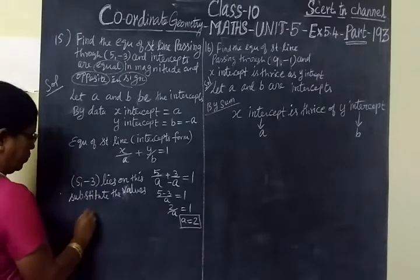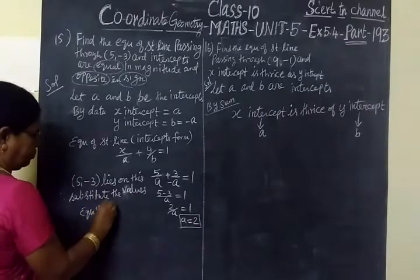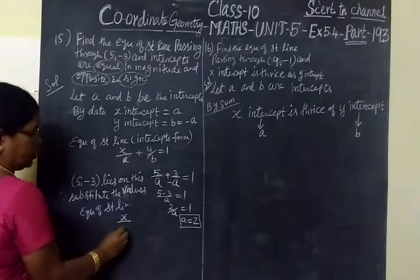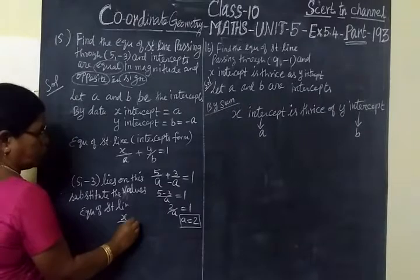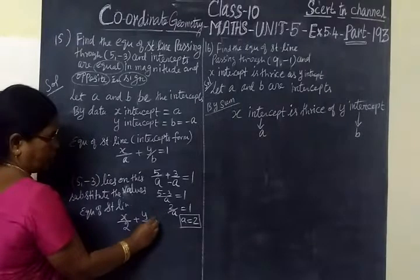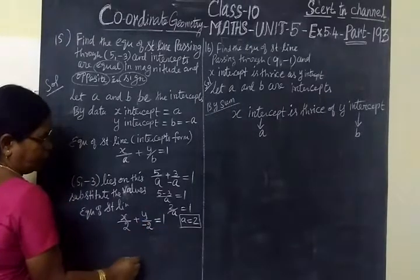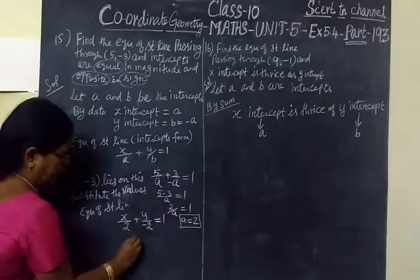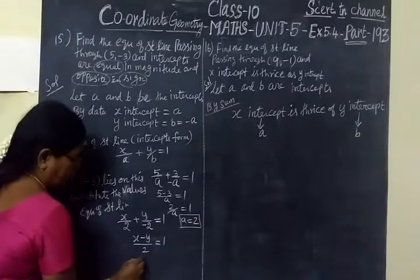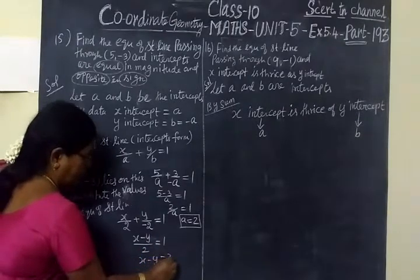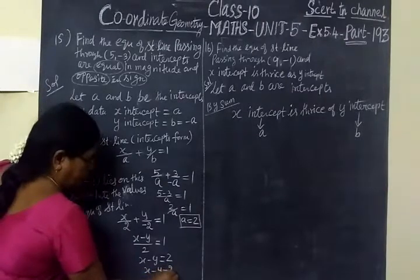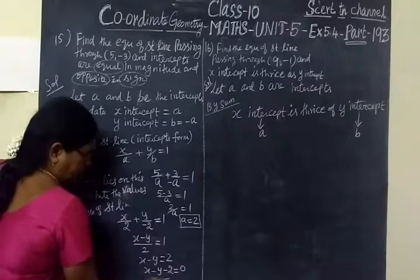Now we substitute A equals 2 into the equation. The equation of the straight line is x by 2 plus y by minus 2 equals 1, which gives x minus y by 2 equals 1, that is x minus y equals 2, or x minus y minus 2 equals 0.